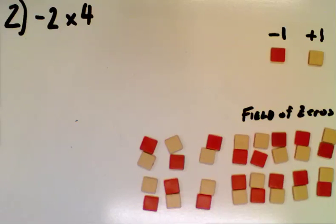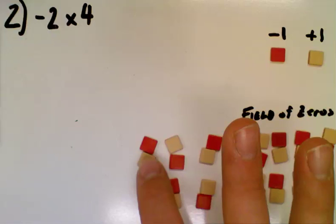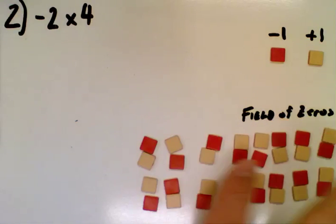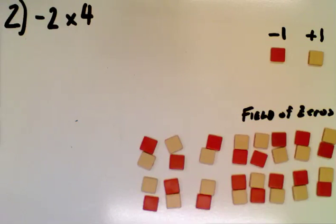Now, when we look at the second question, negative 2 times positive 4, we certainly could talk about the commutative property of multiplication and just swap the two as a positive times a negative. But what we want to do is we want to set up how we're going to do a negative times a negative, and we're going to do that by using this field of zeros here. And the field of zeros is basically just that, pairs of algebra tiles that add up to zeros. So in this case, there's a bunch of pairs that add up to zero. And so we're going to interpret exactly what this multiplication question represents.